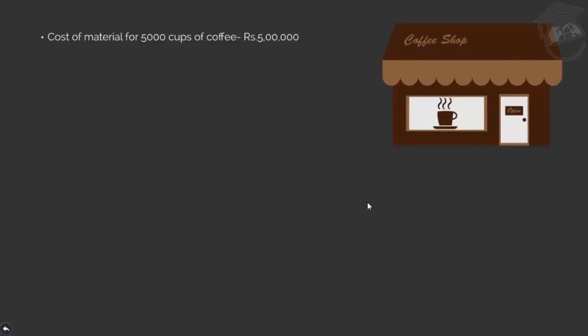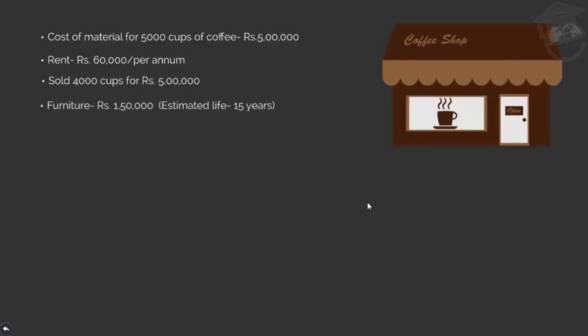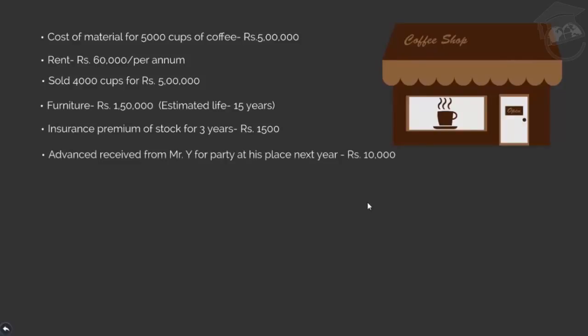The data is: cost of material for 5,000 cups of coffee is Rs. 5 lakh; rent Rs. 60,000 per annum; sale of 4,000 cups of coffee for Rs. 5 lakh; furniture costed Rs. 1 lakh 50,000 with an estimated life of 15 years; insurance of stock for the next 3 years including this year at a premium of Rs. 1,500; and advance received from Mr. Y for a birthday party next year — Rs. 10,000. From this data I have to calculate net profit.